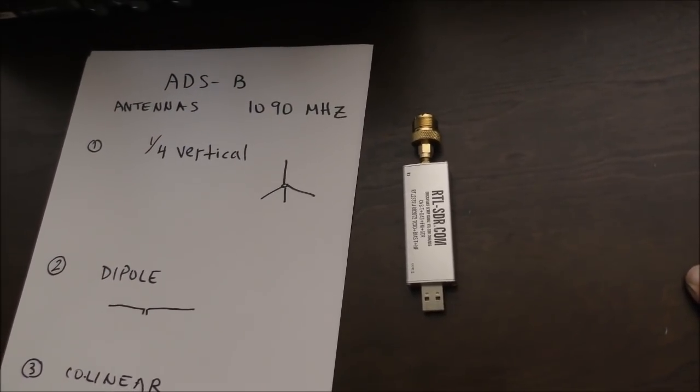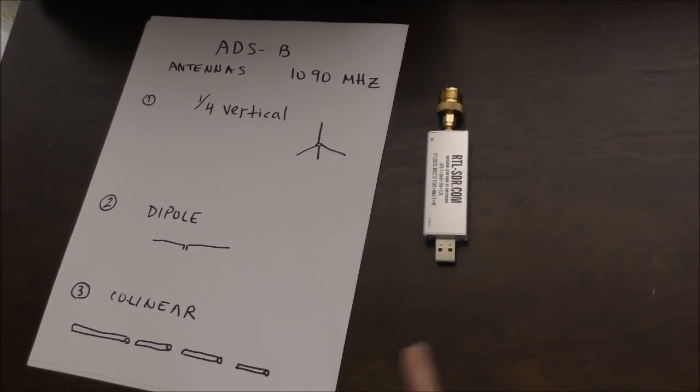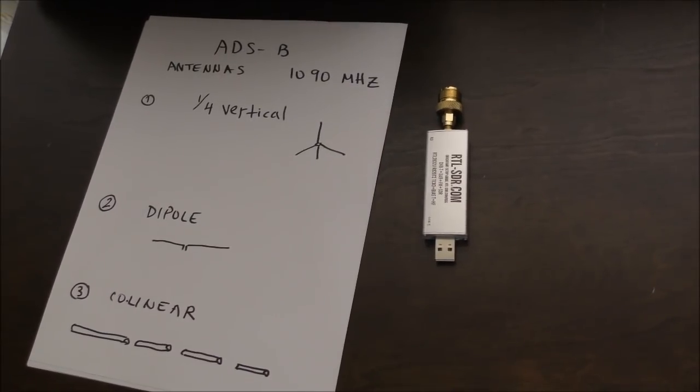The great thing about ADS-B is that to receive it, you only need very simple equipment. A laptop, an SDR like this, which costs around $20, and a very simple antenna.